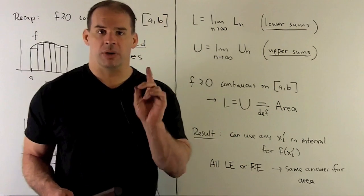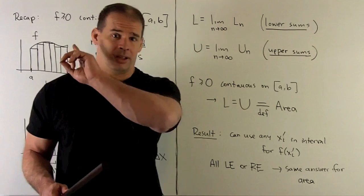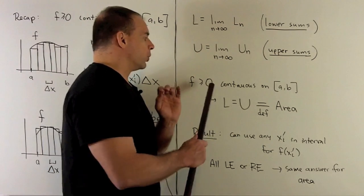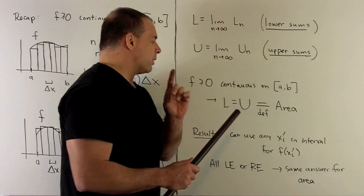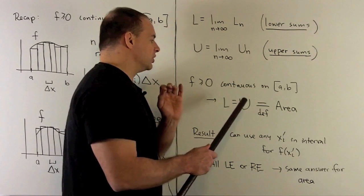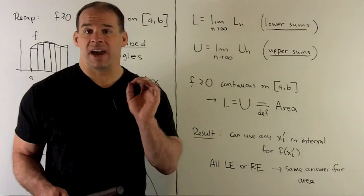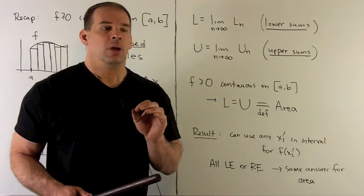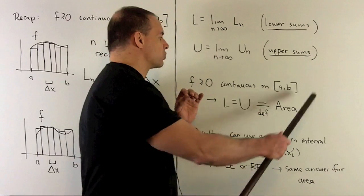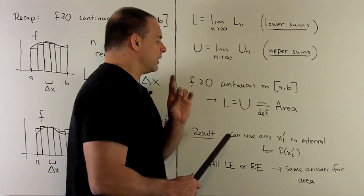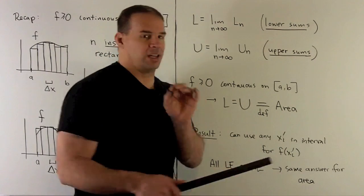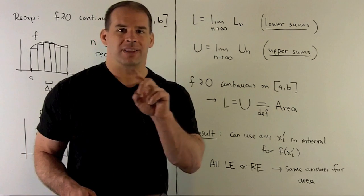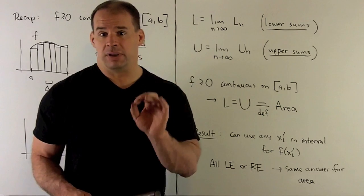Now, a big result: if f is greater than or equal to zero and we're continuous on the interval, then we'll have L is equal to U, and I take that as the definition of area. One consequence of this result is that it won't matter what point you use in each subinterval to get your height. So you don't have to use endpoints — you could use any point in the interval that makes things convenient.